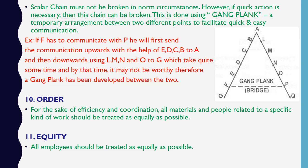The scalar chain must not be broken under normal circumstances; however, if quick action is necessary, the chain can be broken using a gangplank — a temporary arrangement between two different points to facilitate quick and easy communication. For example, if F has to communicate with P, communication can go upwards through E, D, C, B to A, and then downwards through L, M, N, and O to G. Next is order — for efficiency and coordination, all materials and people related to a specific kind of work should be treated as equally as possible. Next is equity — all employees should be treated as equally as possible.